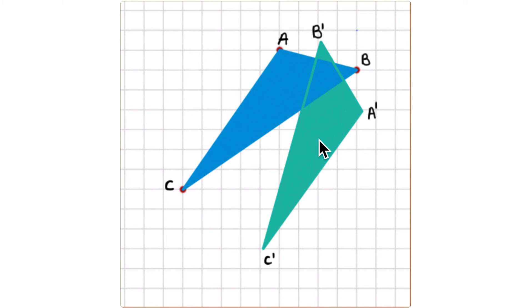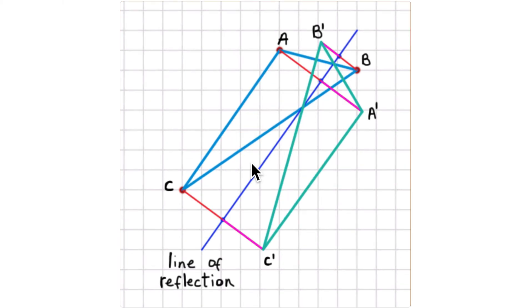If you're asked to find the line of reflection for these reflected copies, connect the corresponding points and find the midpoint of each segment. You can also use additional corresponding point pairs. Connect those midpoints — they all lie on a line — and connecting them draws the line of reflection.